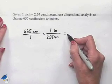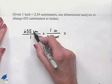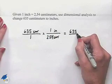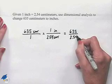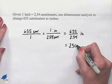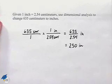To evaluate this, we're going to notice that the centimeter unit will cancel out. We'll take 635, divide by 2.54, and our unit will be inches, and we can evaluate this using a calculator and come up with 250 inches.